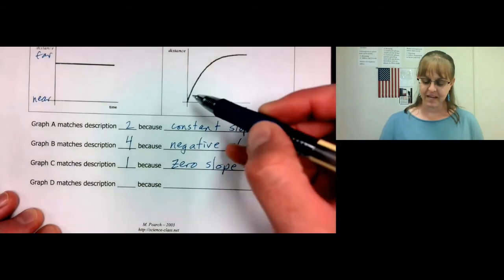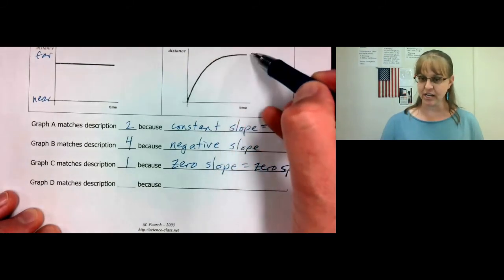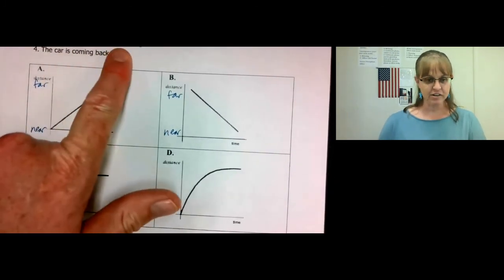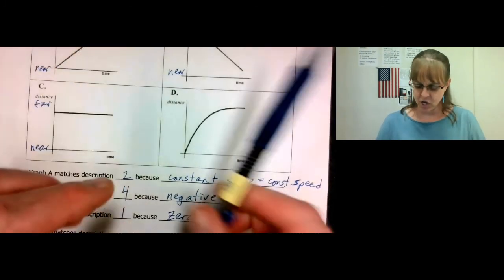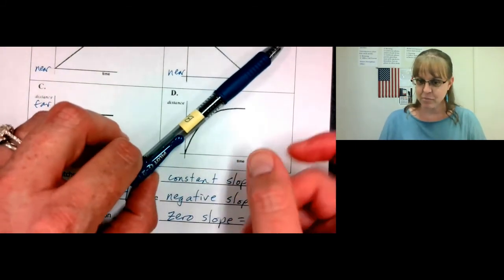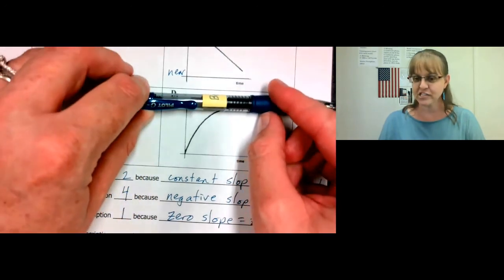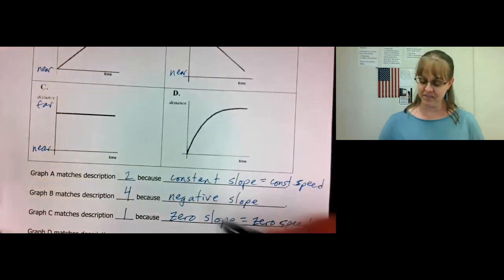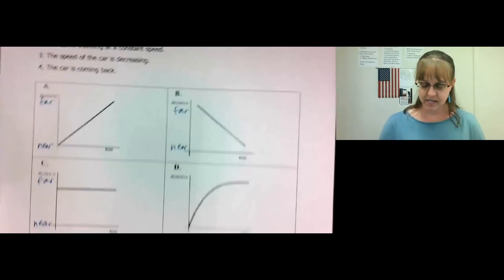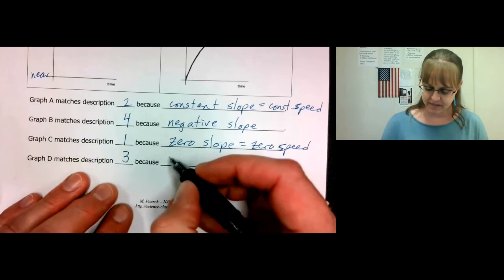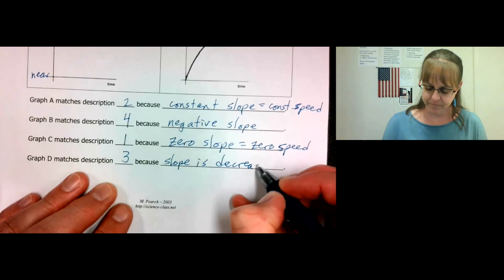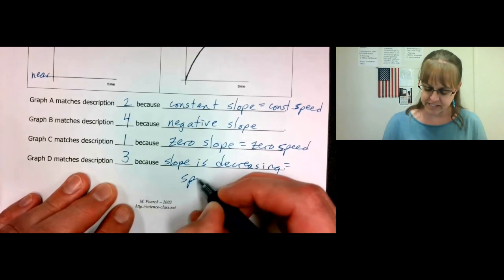Graph D — the speed is changing because the slope is changing. The speed of the car is decreasing. We start out with a steep slope and a fast speed, then a medium slope and a medium speed, then a shallow slope and a slow speed. Therefore, this one is decreasing its speed. Graph D matches description three because the slope is decreasing, and therefore the speed is decreasing.